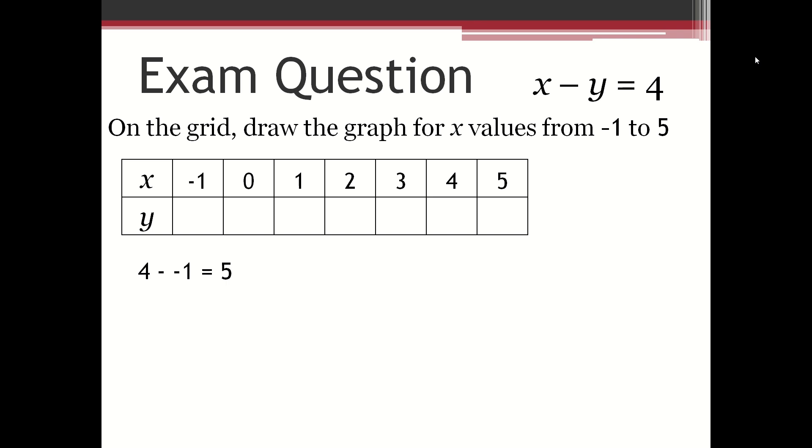So 4 minus minus 1 is equal to 5. 4 minus 0 is equal to 4. 4 minus 1 is equal to 3. 4 minus 2 is equal to 2.